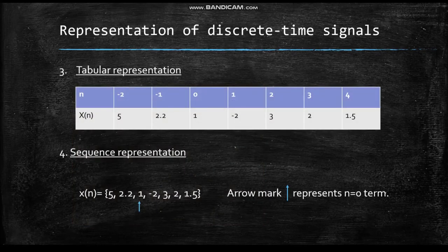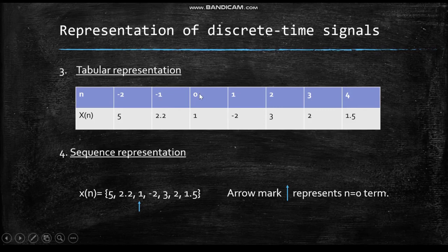The third method is tabular representation. Here the first row represents n while the second row represents x(n). When n = −2 it is 5, n = −1 it is 2.2, n = 0 it is 1, n = 1 it is −2, n = 2 it is 3, n = 3 it is 2, and n = 4 it is 1.5.